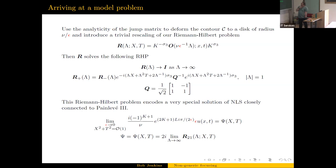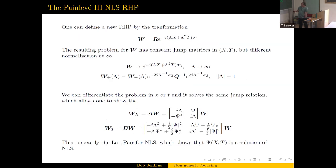So what you can prove is that as ε goes to zero with X and T in some compact set, the solution of NLS converges to this function ψ that you get out of this Riemann-Hilbert problem.